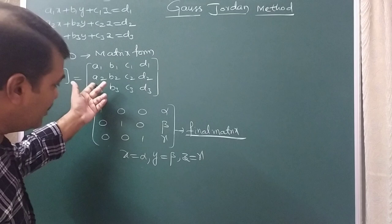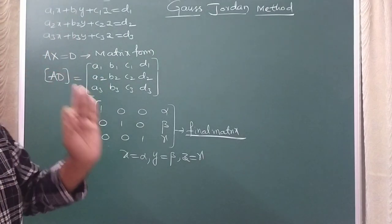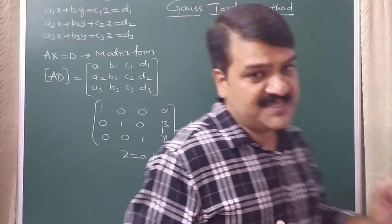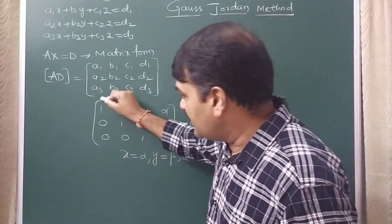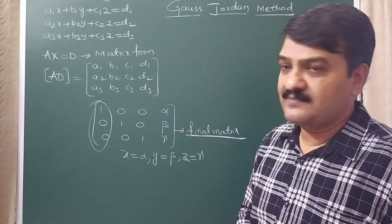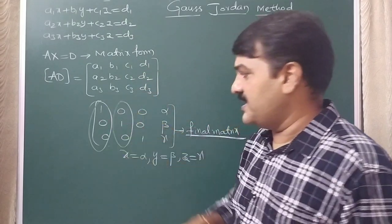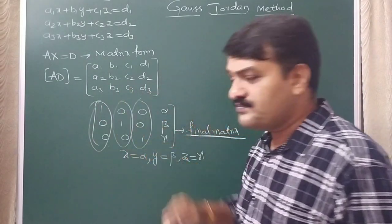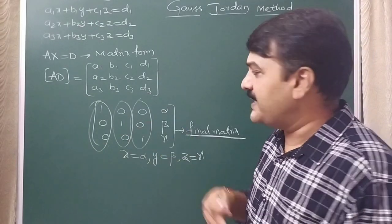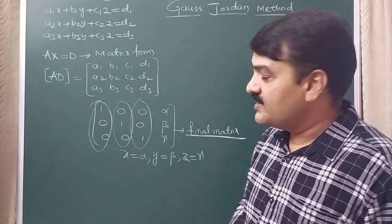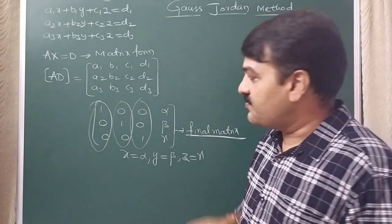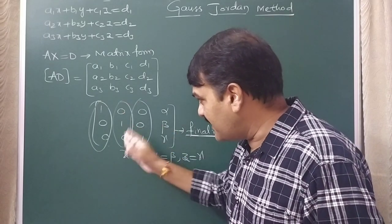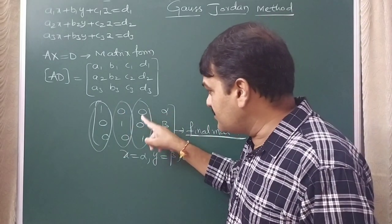How to convert into this model is what is most important. We must use only elementary row transformations and proceed step by step. In the first step, get the first column into the form [1, 0, 0]. In the second step, get the second column into the form [0, 1, 0]. In the third step, get the third column into the form [0, 0, 1]. Go in order — do not try to get elements in a jumbled manner — then the process will be easy.